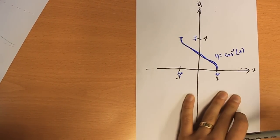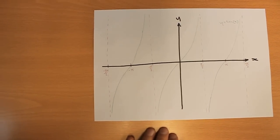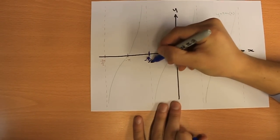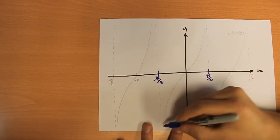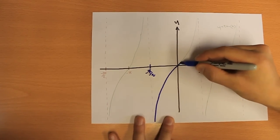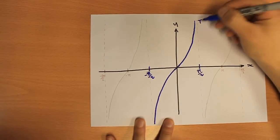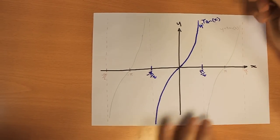One more trig function to do. We are going to look at tan x. So tan x, to get it as a one-to-one function, we need to go between minus pi over 2 and pi over 2, which gives us this bit in the middle between the first two asymptotes. So that is the function y equals tan x.